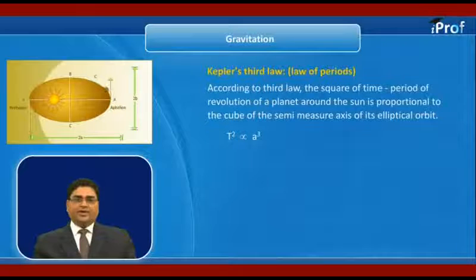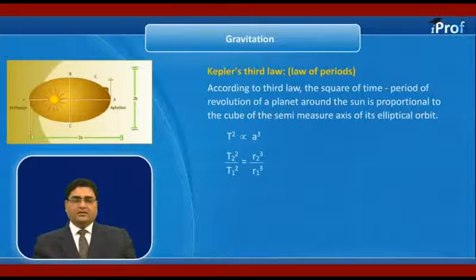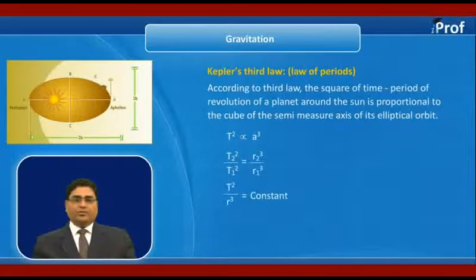Remember, Kepler's second law is applicable only for one planet at a given time, while Kepler's third law is applicable for multiple planets, so we can write T2 square upon T1 square equal to R2 cube upon R1 cube, that is T square upon R cube is constant, where R is the average distance of the planet from the Sun.